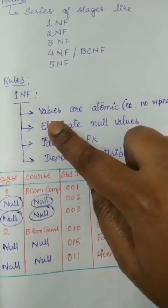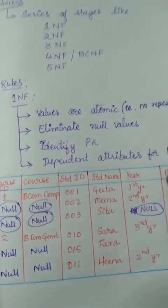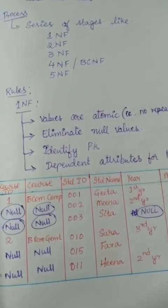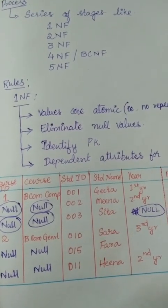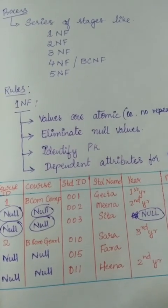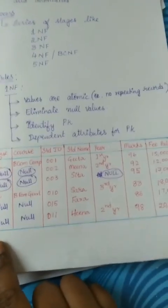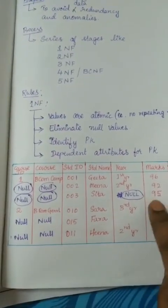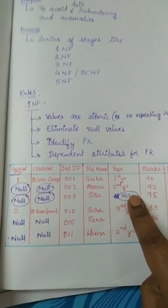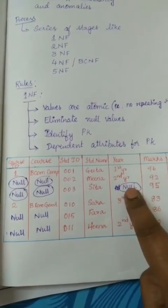So now let us see what the basic rules are when designing a First Normal Form. When we are designing for the data, we have different stages. When talking about the First Normal Form, the data should be collected. In this form, different data will be collected, and if you see here, there are some blank records where there is no particular value. These are called null values.